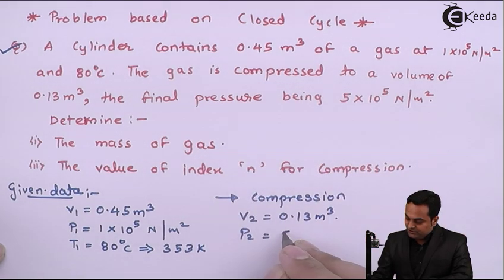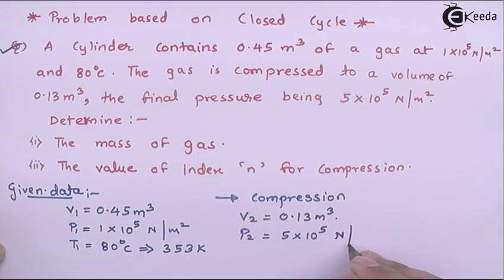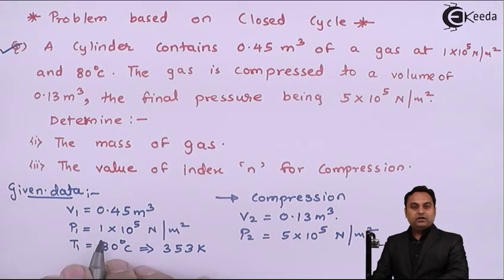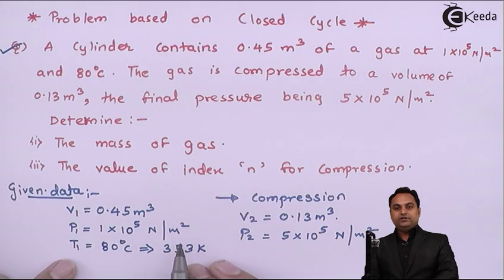now it is 5×10^5 Newton per meter square. Determine the mass of gas, so we have to find out the value of M